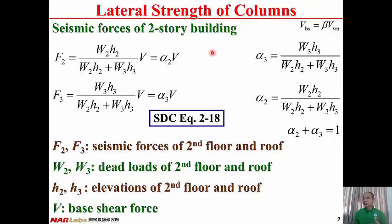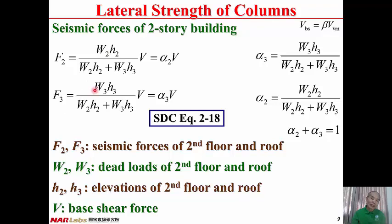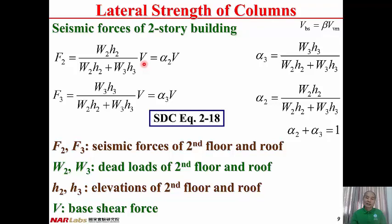The seismic force, or base shear, is distributed vertically to each story. F2 and F3 are the seismic forces at the second floor and the roof. F2 is proportional to the weight W2 and the elevation H2 of the second floor. F3 is proportional to the weight W3 and the elevation H3 of the roof. Therefore, F2 equals (W2 × H2) / (W2 × H2 + W3 × H3) times V, which equals alpha2 times V. Similarly, F3 equals alpha3 times V.